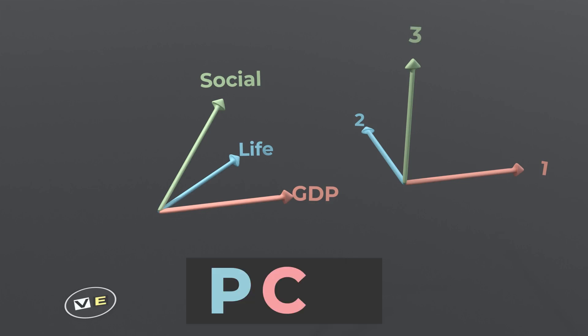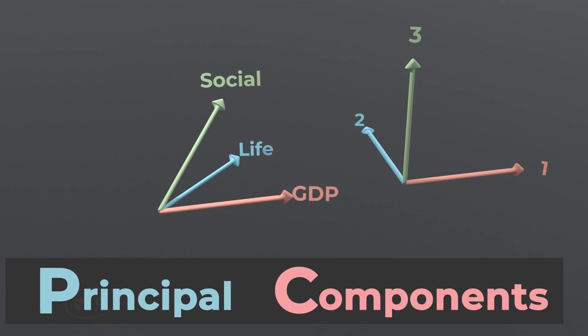These new factors produced by PCA are called principal components, and they are constructed in such a way that if you restrict your attention to the first few components only, you would still get a faithful representation of the data.